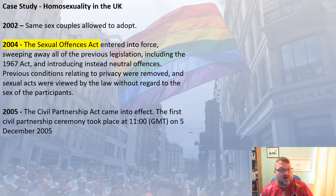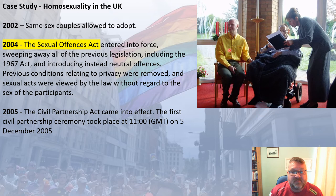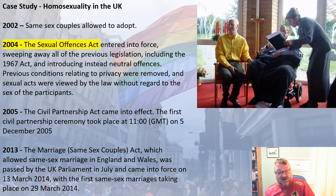In 2005, the Civil Partnership Act came into effect and the first civil partnership ceremony took place at 11 o'clock on 5th December 2005. Notably, this first ceremony took place at a hospice — the couple had been together for years, one partner was terminally ill, and he died the very next day, but he lived long enough to have the civil partnership with the man he loved. In 2013, the Marriage (Same Sex Couples) Act was passed by Parliament, coming into force in March 2014, with the first same-sex marriages taking place on 29th March 2014.